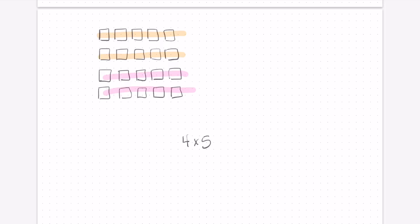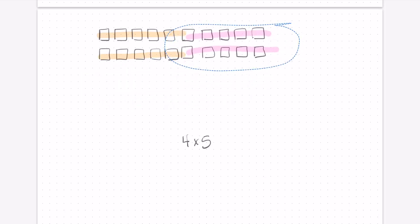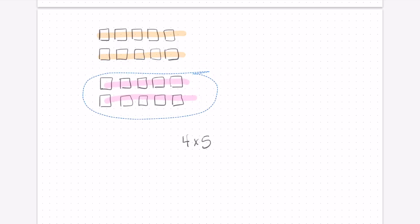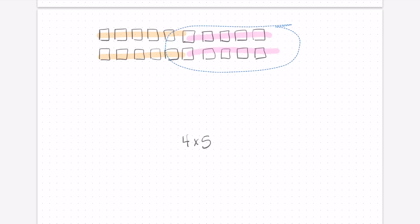We are going to take that bottom row, or sorry, the bottom 2 rows, and we are going to rearrange them. We are going to move them up here. Okay, so we started with 4 rows of 5. Now we are splitting those rows, we are dividing them in half, and we are just going to move them up here.